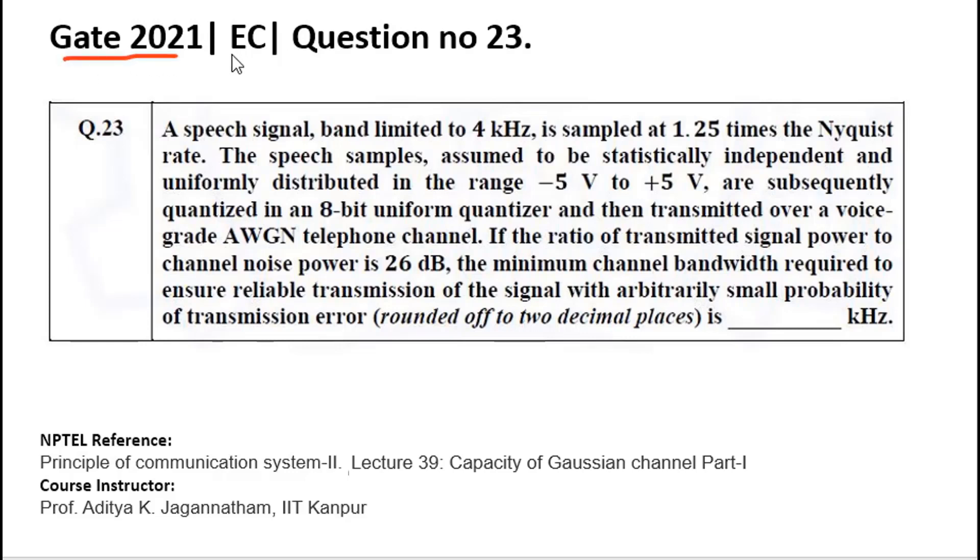This is a question asked in GATE 2021, Electronics Communication. You have a speech signal which is band-limited to 4 kHz and it is sampled at 1.25 times its Nyquist rate. After that, this speech signal is quantized using an 8-bit uniform quantizer and transmitted over a voice-grade AWGN telephone channel where the signal to noise power ratio is 26 dB. You need to find out the minimum channel bandwidth required to ensure this transmission with arbitrarily small probability of transmission error.